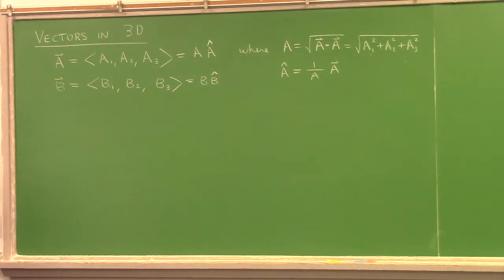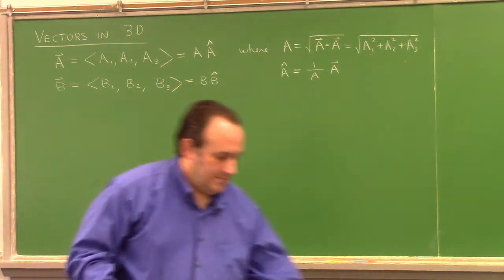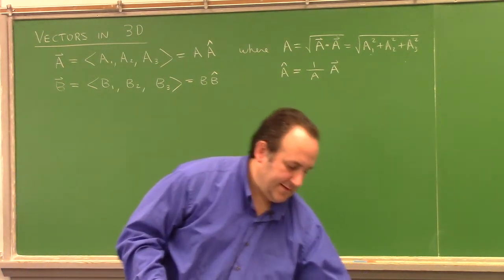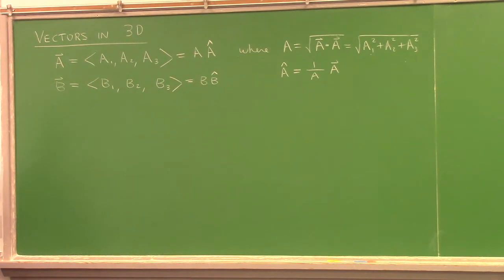As I was mentioning, if you ask what angle vector A is at in three dimensions, that question doesn't quite make sense. You need at least two angles to specify the direction. What I'm alluding to is what's called spherical coordinates — you'll cover that in Calculus 3.